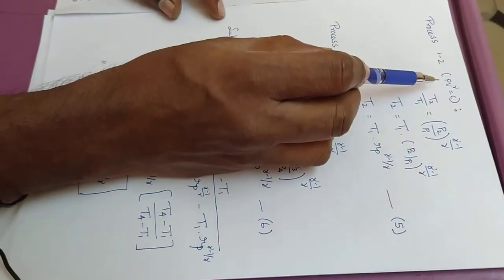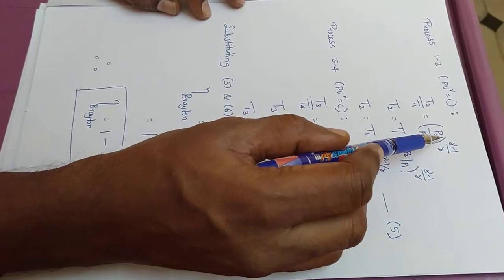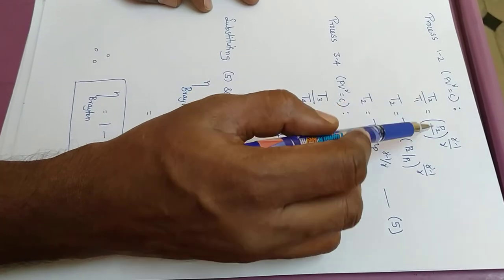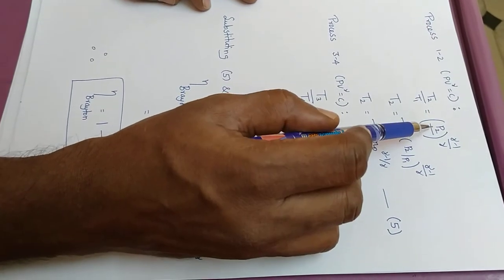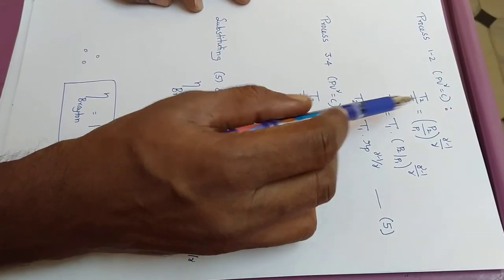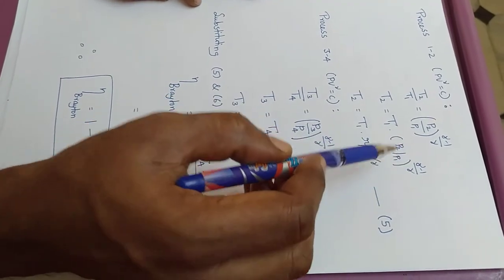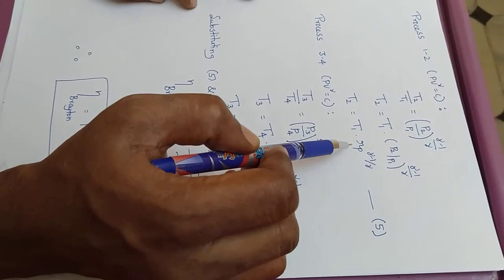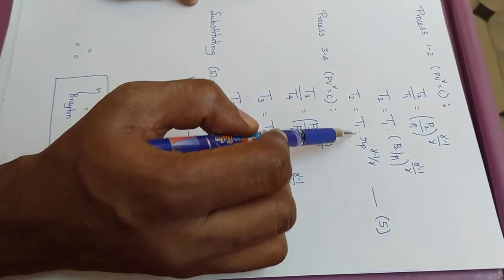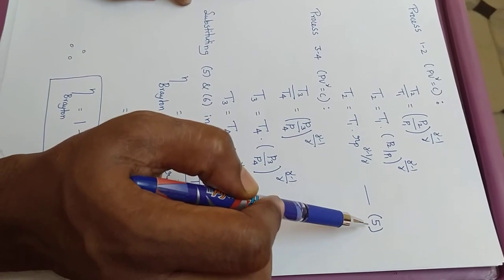In process 1 to 2, the isentropic compression process, T2 by T1 is equal to (P2 by P1) raised to the power (gamma minus 1) by gamma. This is the relationship between temperature and pressure during an isentropic process. Therefore T2 is equal to T1 into Rp raised to the power (gamma minus 1) by gamma. Let us take this as equation 5.